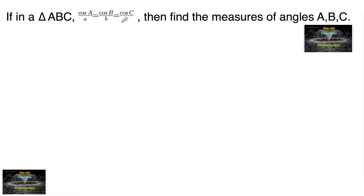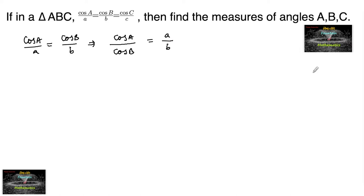In a triangle ABC, if cos A upon A is equal to cos B upon B is equal to cos C upon C, let us consider cos A upon A is equal to cos B upon B. This implies cos A upon cos B is equal to A upon B.